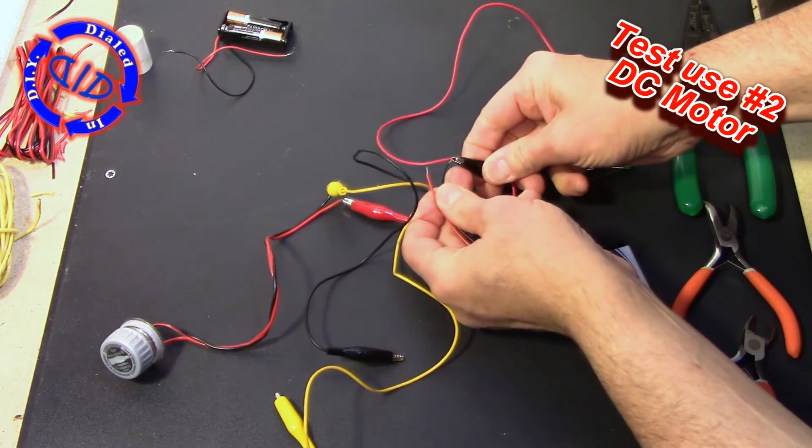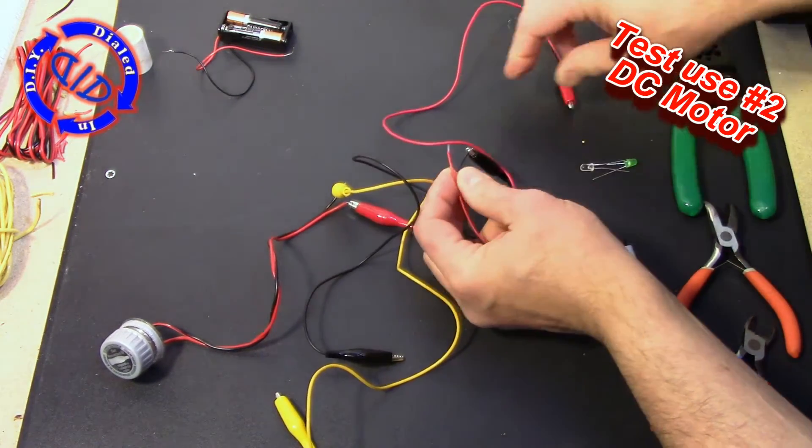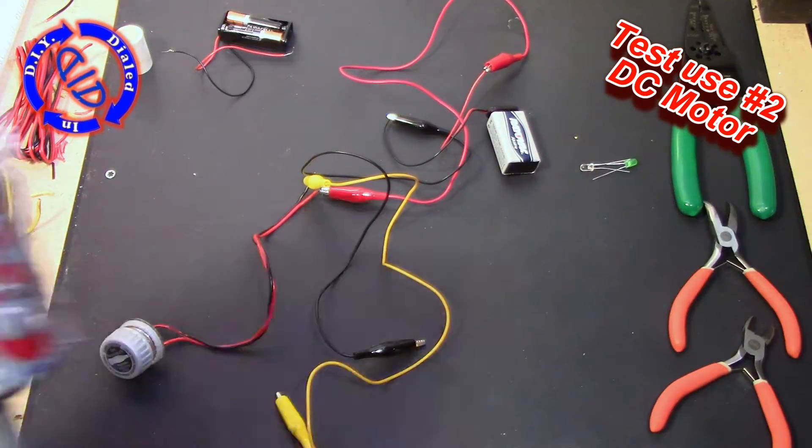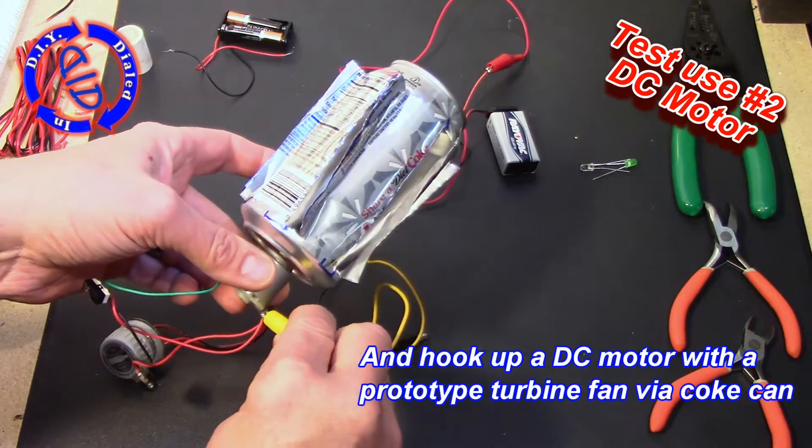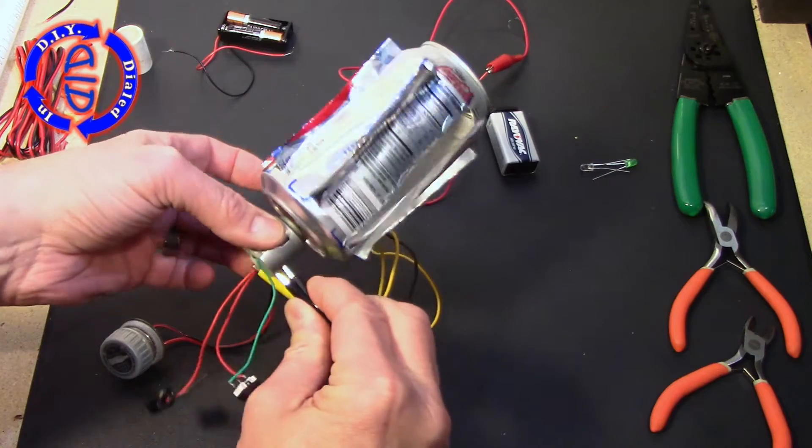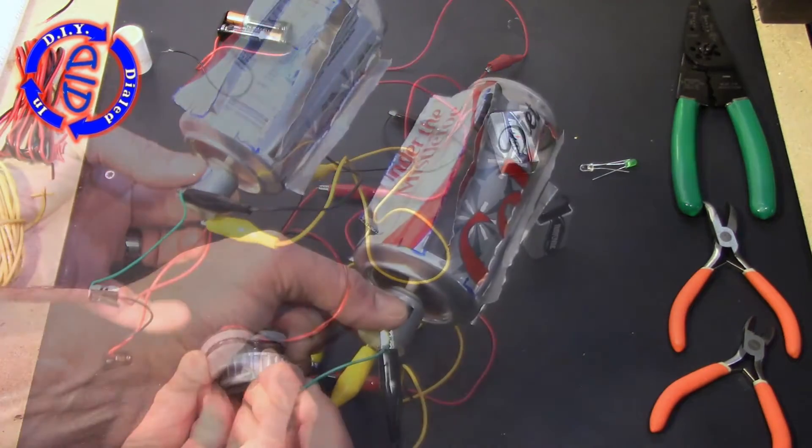So we had a successful test with three volts, let's step it up and try it out with a nine volt battery and see what we can accomplish. I've been working on creating a prototype of a turbine fan blade out of a soda can and this looks like a perfect way to test out our new switch.